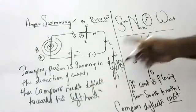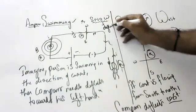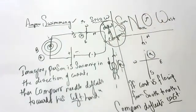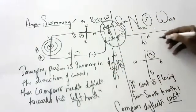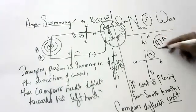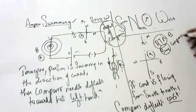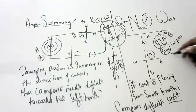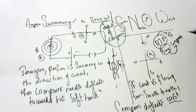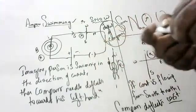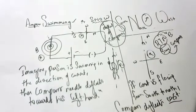So these two rules give the direction of deflection of the compass. The swimming rule and the right-hand thumb rule both give the direction of the magnetic field. Please note down these notes; the worksheet is also available in the description. Thank you.